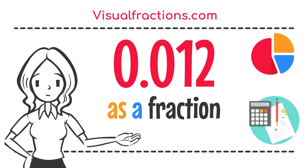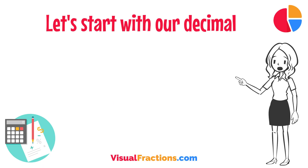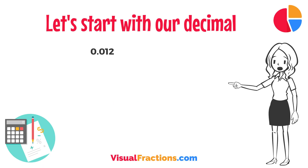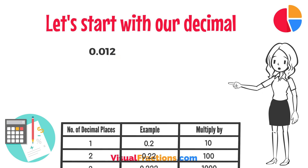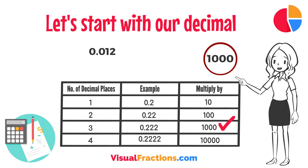Welcome to Visual Fractions. Today, we're diving into how to convert the decimal 0.012 into a fraction. Let's start with our decimal, 0.012. Notice there are three digits to the right of the decimal. This places it in the thousandths position.